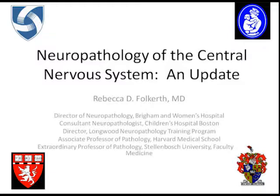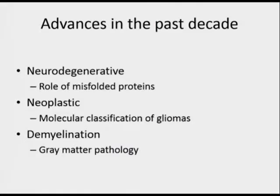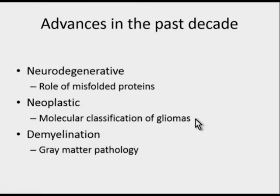Hello, my name is Rebecca Folkert and I'm a neuropathologist in Boston. I'll be giving today the topic of Neuropathology of the Central Nervous System, an update. There are many advances in the past decade, not all of which we will have time to discuss, so I've chosen three here: neurodegenerative neuropathology focusing on misfolded proteins, neoplastic pathology with molecular classification of gliomas, and demyelination, specifically the gray matter pathology that's been noted more recently.